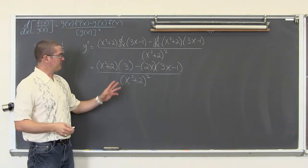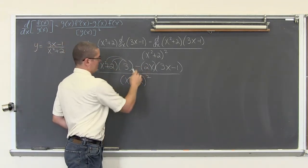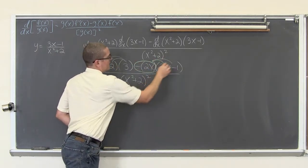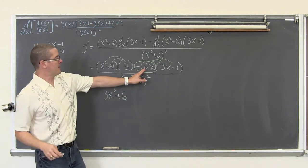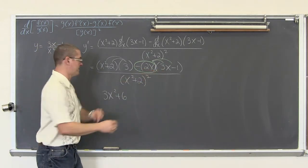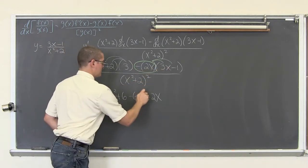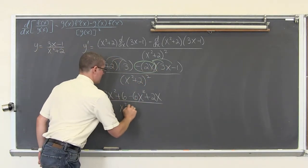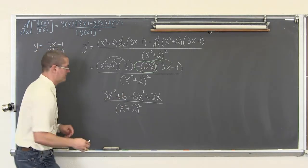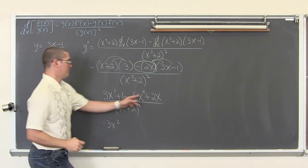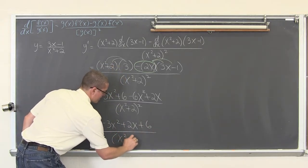All we have to do now is clean up a little bit. We have 3 times x squared and 3 times 2, and I am going to distribute that negative 2x through the parenthesis. We get 3x squared plus 6, and negative 2x times positive 3x is negative 6x squared. Negative times negative is positive, so plus 2x. All over x squared plus 2 squared.